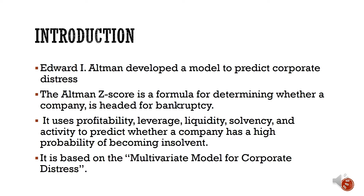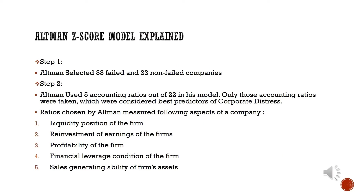As we have already discussed, this model is based on a multivariate model for corporate distress, and you will see that Altman followed the same steps to develop this model. In his study, Altman selected 33 distressed and 33 non-distressed firms. He identified 22 accounting and non-accounting ratios which were considered to be predictors of corporate distress. Out of these, Altman selected 5 ratios which were the best predictors of corporate distress.